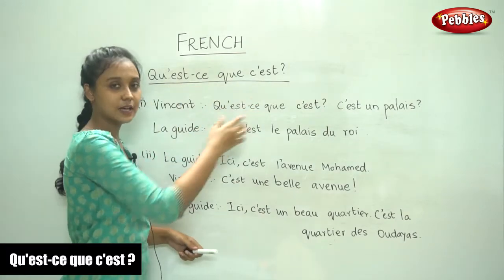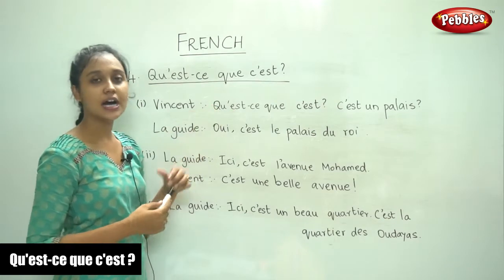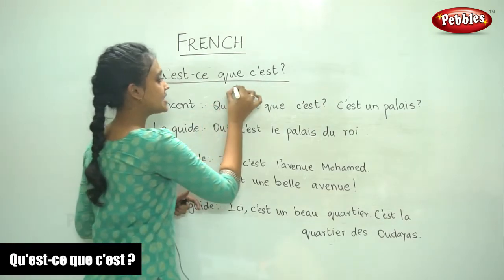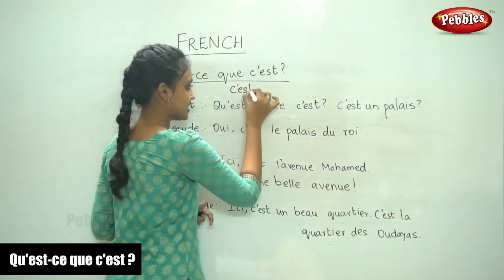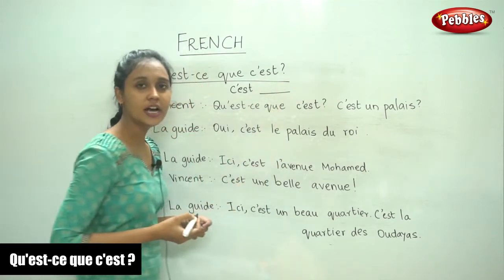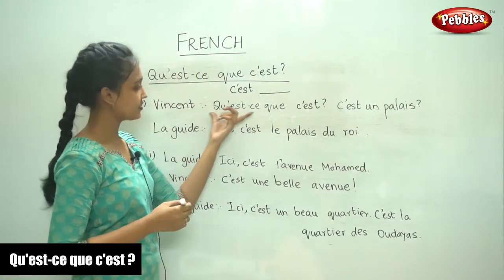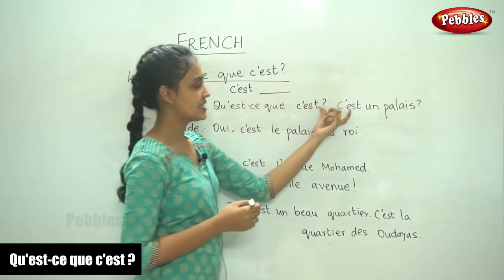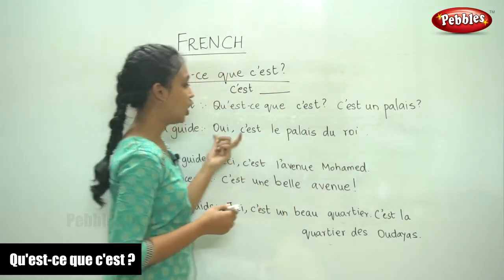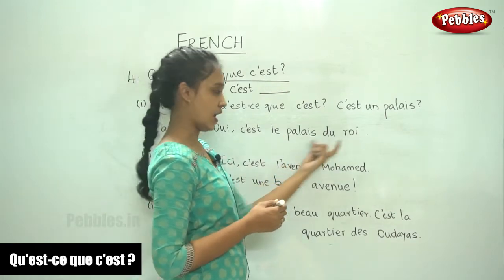So the question we are going to ask is 'Qu'est-ce que c'est?' — What is this? And your answer will begin with 'C'est' — it is. For example: 'Qu'est-ce que c'est?' 'C'est un palais?' 'Oui, c'est le palais du roi.'